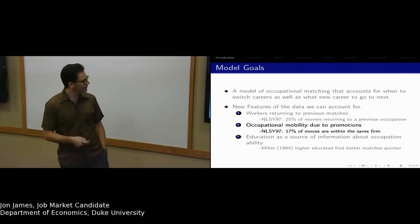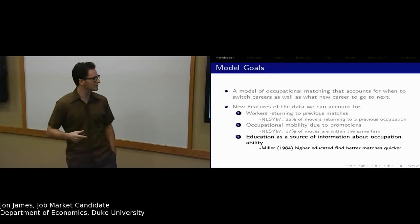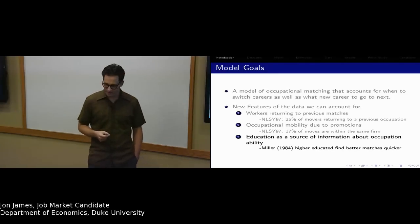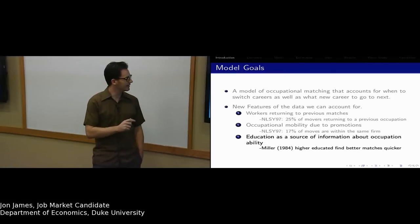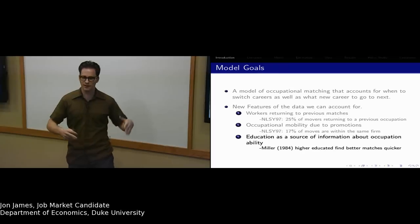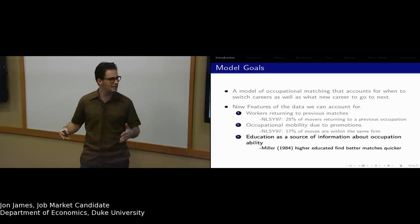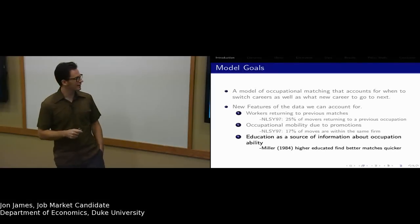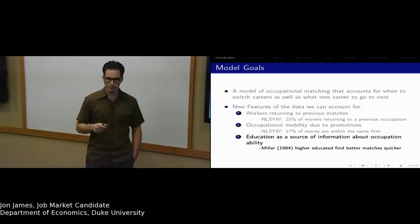The final feature of the data is education as a source of information about occupation ability. Miller (1984) finds that higher educated individuals tend to find better matches quicker. Unless we model the education decision and the occupational matching decision simultaneously, we're not going to be able to figure out what gives these higher educated individuals better information.